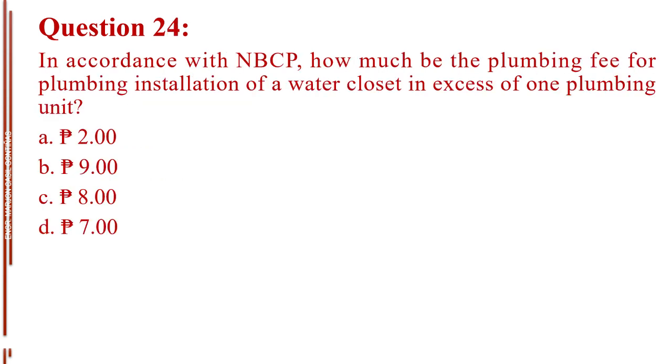Question number 24. In accordance with NBCP, how much be the plumbing fee for plumbing installation of a water closet in excess of one plumbing unit? Letter A, 2 pesos. Letter B, 9 pesos. Letter C, 8 pesos. Letter D, 7 pesos. The answer is Letter D, 7 pesos.